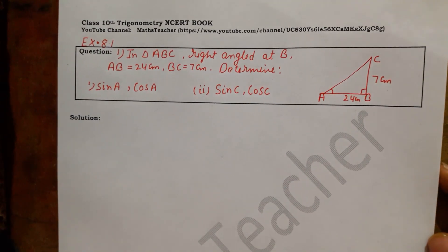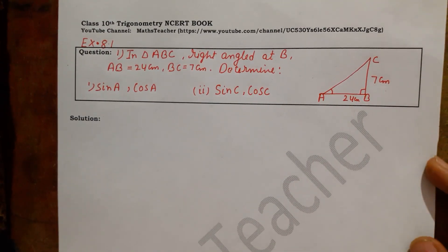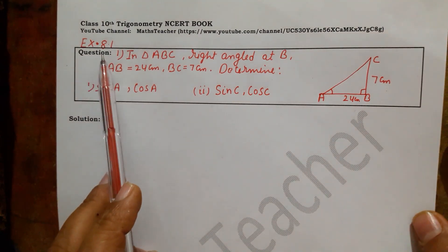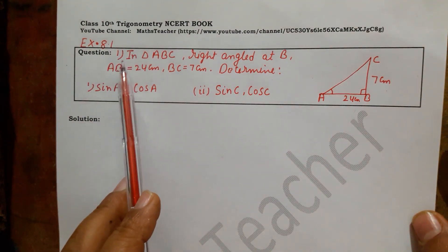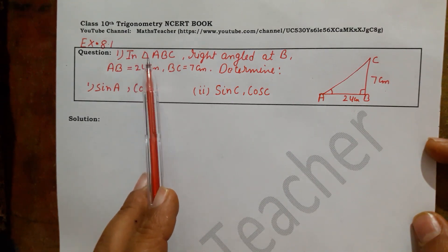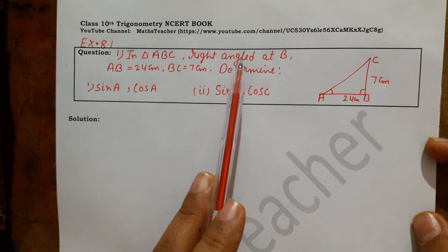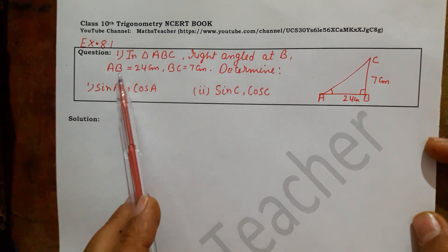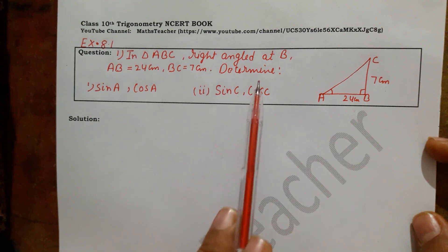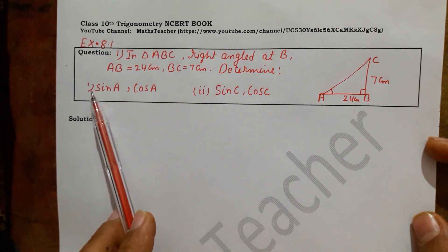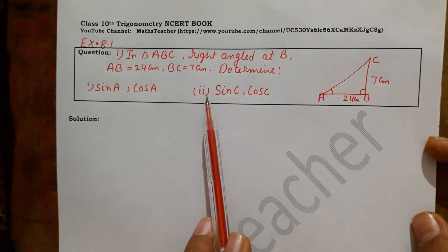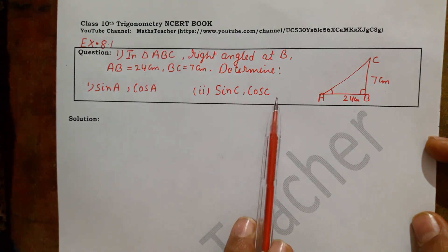Hello viewers, I am Rashmi, welcome to my channel. In this video we will solve Exercise 8.1 Question number 1. In triangle ABC, right angled at B, if AB equals 24 cm and BC equals 7 cm, determine: first part, find sin A and cos A; second part, find sin C and cos C.